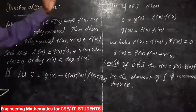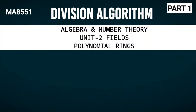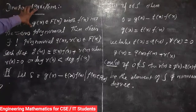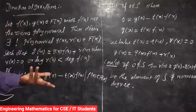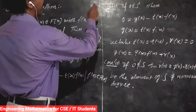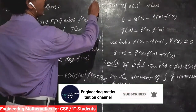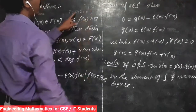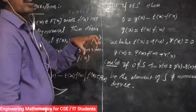We will talk about the division algorithm — specifically, the division algorithm in polynomial rings. For example, consider 5 divided by 2. If you divide, you get a quotient and a remainder: 5 can be written as 2 times 2 plus 1. So the quotient is 2 and the remainder is 1.